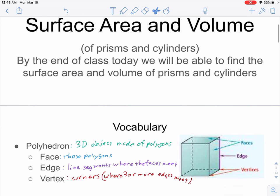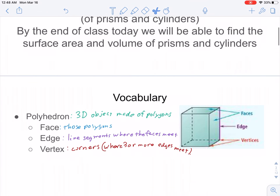So first off, here's the sort of thing that we're going to be finding the surface area and volume of: a polyhedron. It's a 3D object made of polygons. It has faces, edges, and vertices. The faces are the polygons. Edges are line segments where the faces meet. Vertices are corners where three or more edges meet.